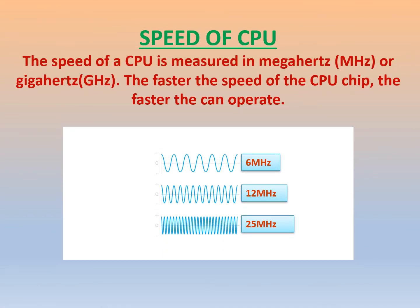Now children, let us see the speed of the CPU. The speed of a CPU is measured in megahertz and gigahertz. The faster the speed of a CPU chip, the faster the computer can operate. So whenever we have a faster speed, our computer will work fast. The speed of the CPU is increasing day by day. Earlier computers had very low CPU speeds, whereas nowadays we have very high CPU speeds.